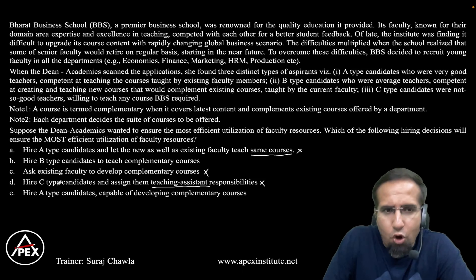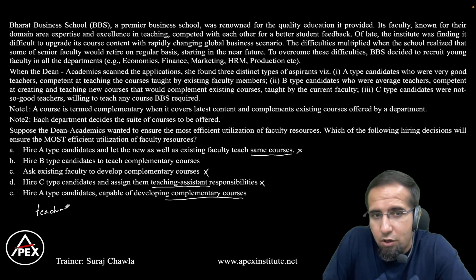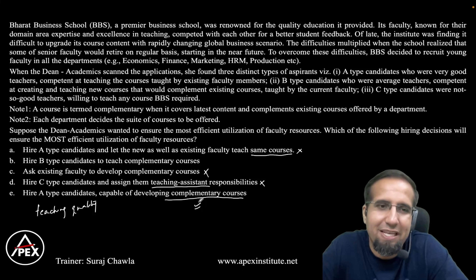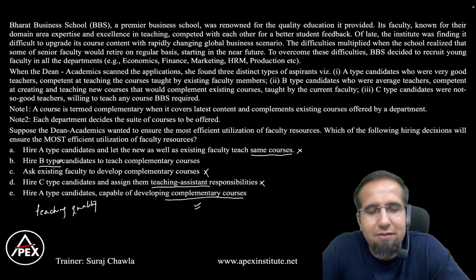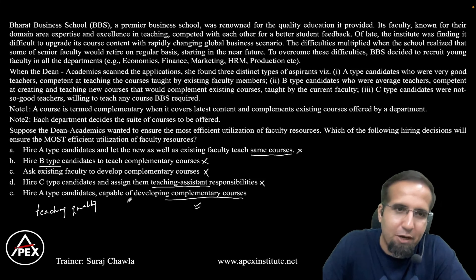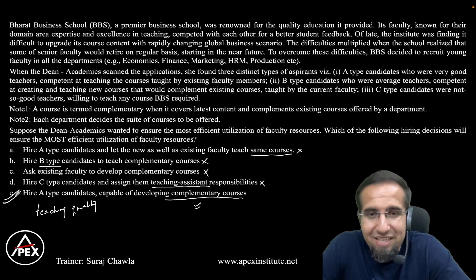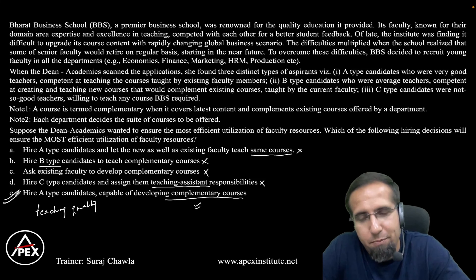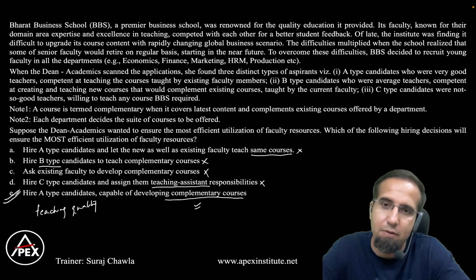Option E: hire Type A candidates capable of developing complementary courses. Comparing option B and option E — if Type A candidates can develop complementary courses, I achieve a balance between teaching quality and introducing complementary courses. Type B candidates are average faculty, which makes option B a slightly lesser preferred option compared to option E. Therefore option E becomes the final answer. Keep the problems clearly in mind and avoid personal bias — that makes decision-making straightforward.